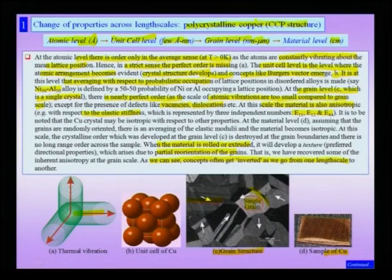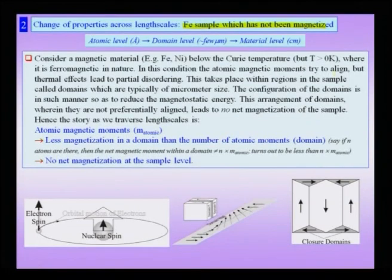We are now in a position to proceed to the second example, which is the example of an iron sample which has been magnetized.